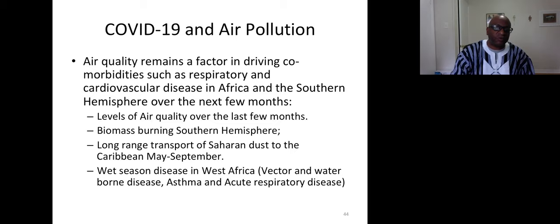So if you're asthmatic, as you know, COVID-19 tends to attack the respiratory system. You already are in a state of vulnerability if you have COPD or if you have asthma, so you're more vulnerable to the disease. But over the next few months we need to think about how air pollution or air quality might interact with COVID-19. First of all, what were the levels of air quality over the last few months? As we see the number of cases increase, we should look at that. Biomass burning in the Southern Hemisphere is going to reduce air quality over the next few months, and then dust will be transported down towards the Caribbean. And finally, we're going to have wet season diseases in West Africa. We know these already exist, vector-borne and water-borne diseases, and then asthma and acute respiratory infection.